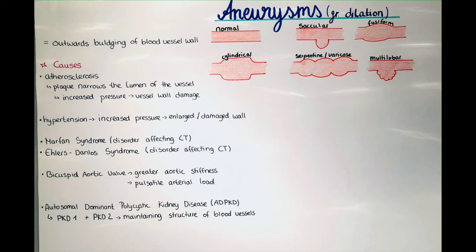Smoking is also a major risk factor because it damages the endothelial wall inside the blood vessel, which leads to damage and also contributes to atherosclerosis, playing different roles in the formation of aneurysms.